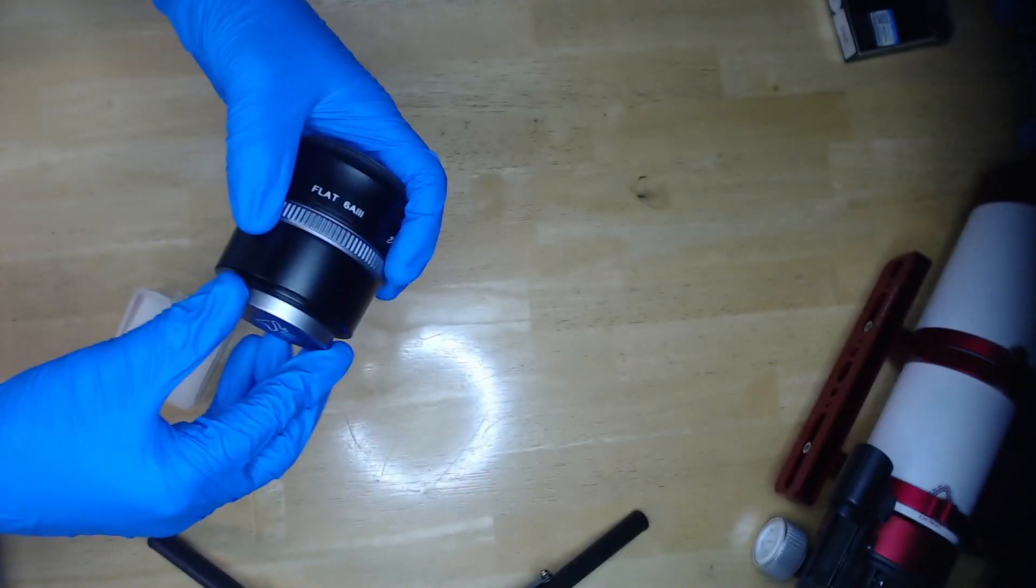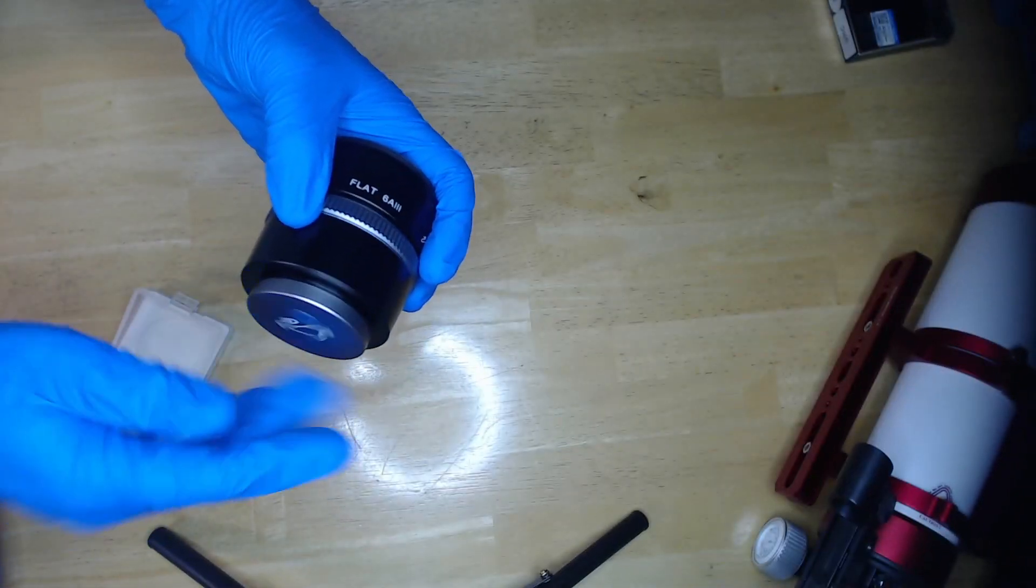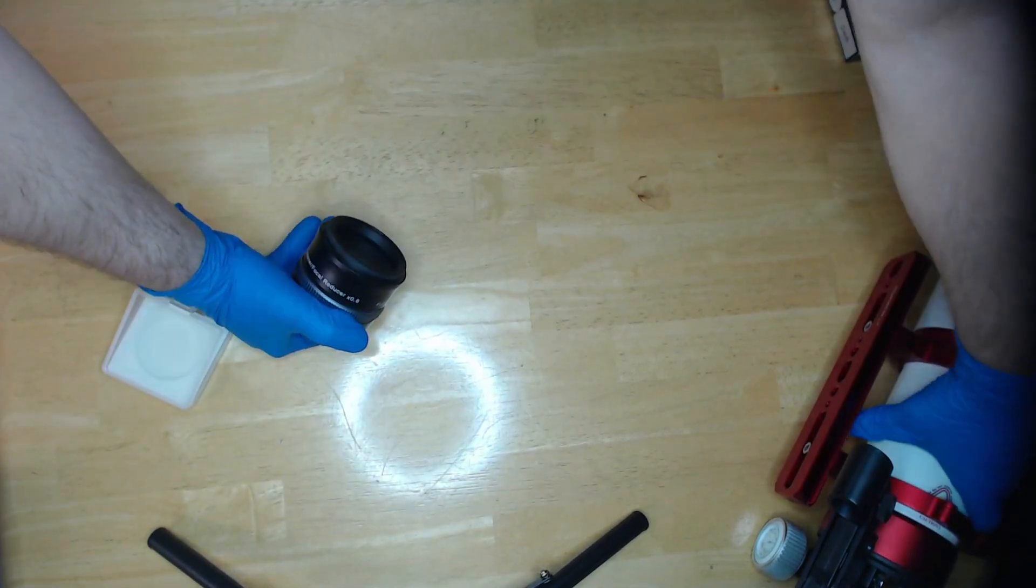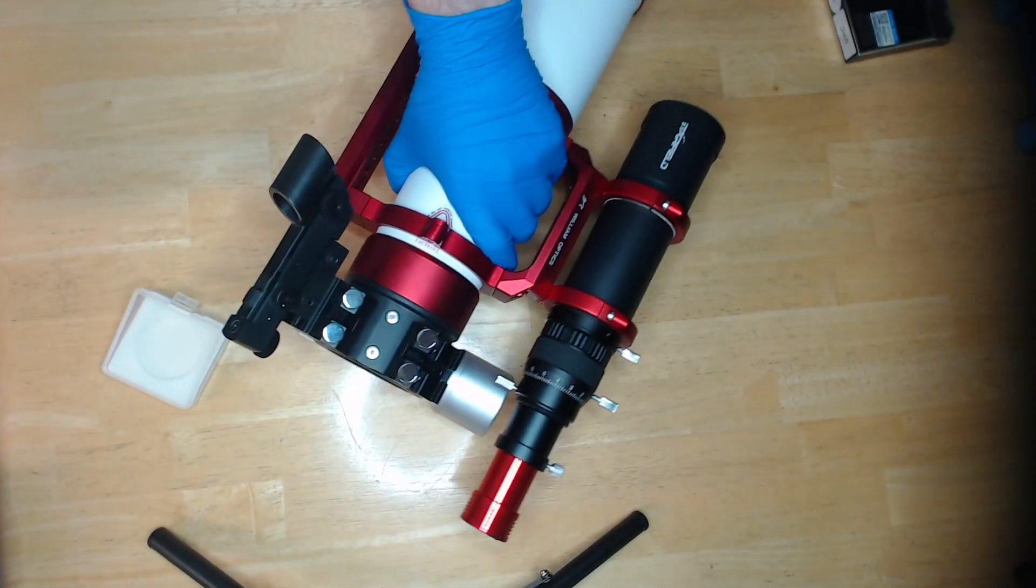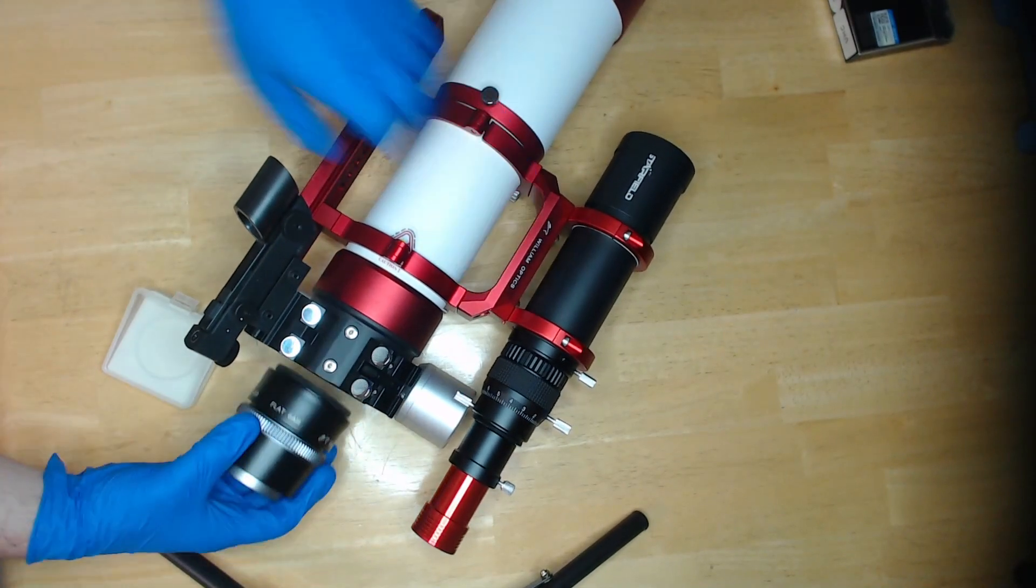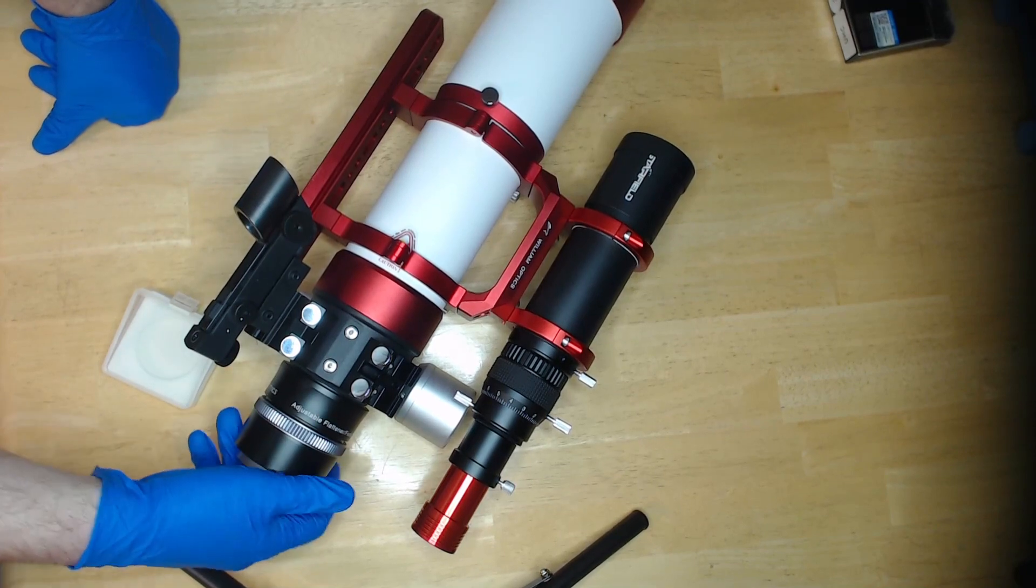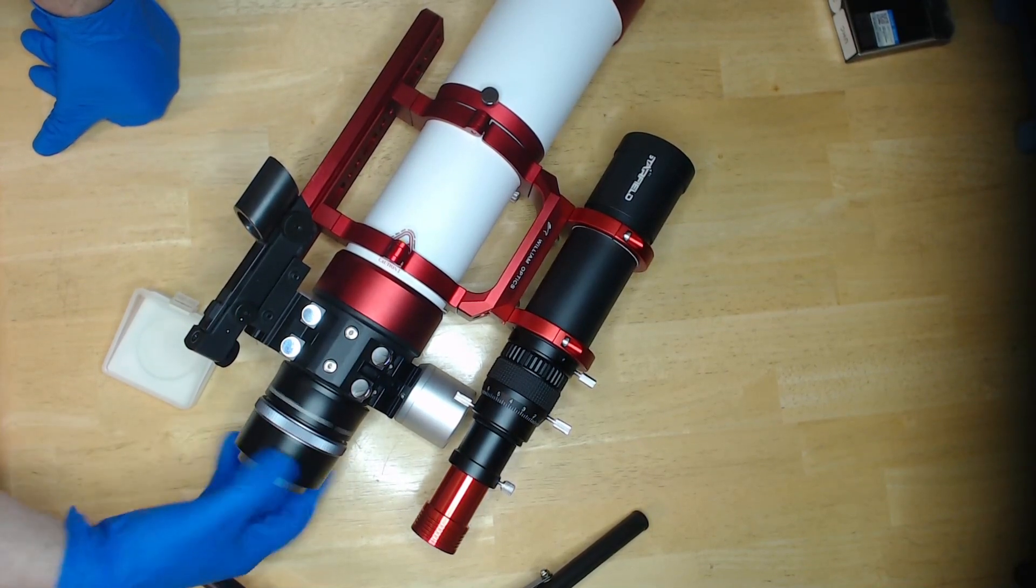Now reinstall the dust cap on the end, then screw it back onto the back of your telescope. There we go.